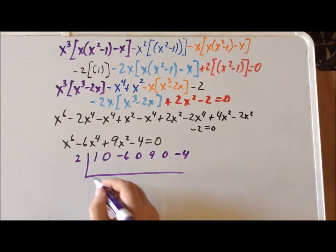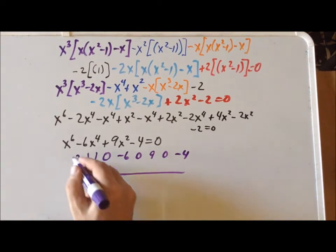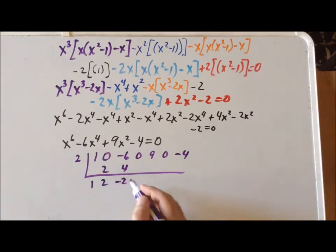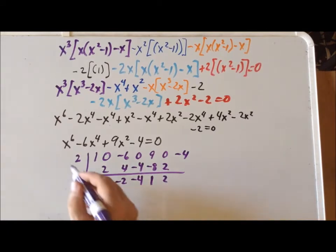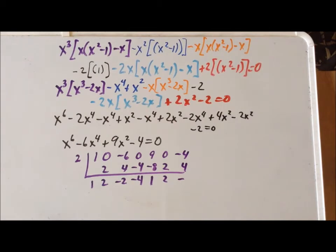Bring down a 1. 2 times 1 is 2. 0 plus 2 is 2. 2 times 4 is 4. Minus 6 plus 4 is minus 2. 2 times minus 2 is minus 4. 9 minus 8 is 1. 2 times 1 is 2. 0 plus 2 is 2. 2 times 2 is plus 4. So this gives us a remainder of 0, which tells us that x minus 2 is a genuine root.